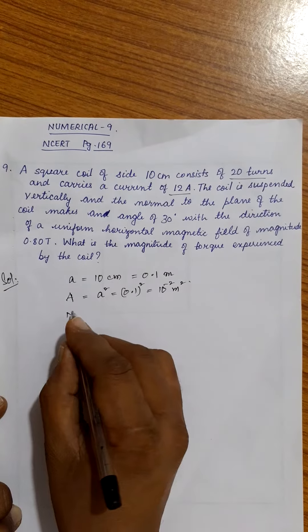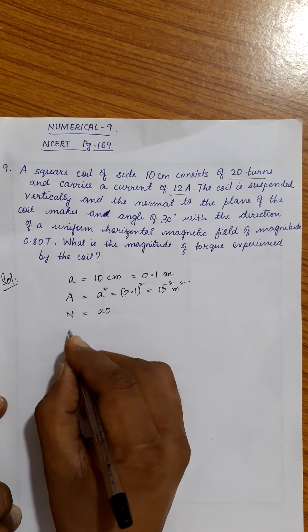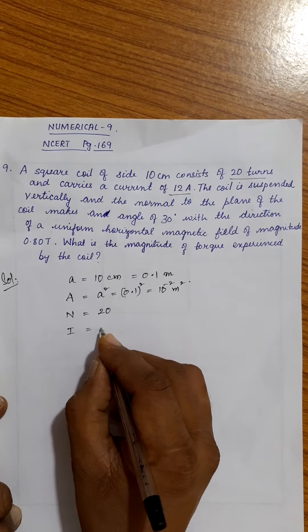Am I right? Next. How many number of turns? 20. What is the current flowing? 12 ampere.